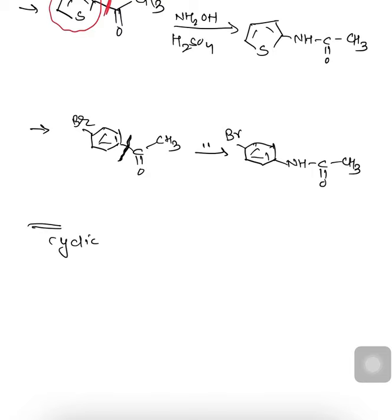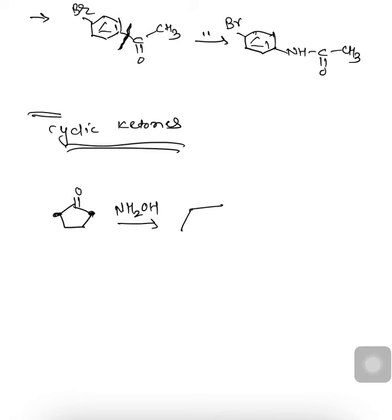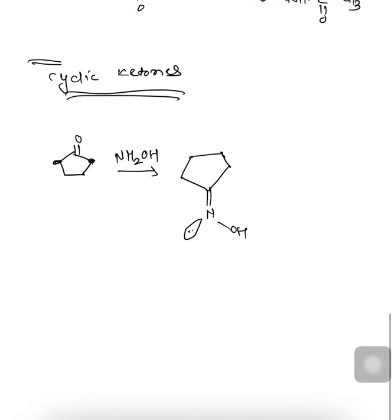In case of cyclic ketones, let us discuss the mechanism. Suppose there is a five-membered ring ketone. The two carbon atoms adjacent to the carbonyl are the possible R groups. When we carry out the reaction with NH2OH, the first step is formation of a ketoxime. We can write this ketoxime as C=N-OH, with the nitrogen atom having a lone pair.